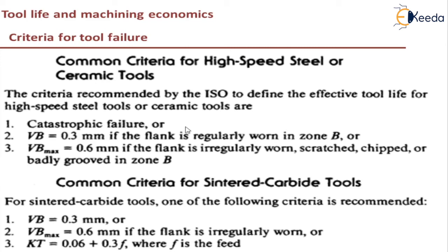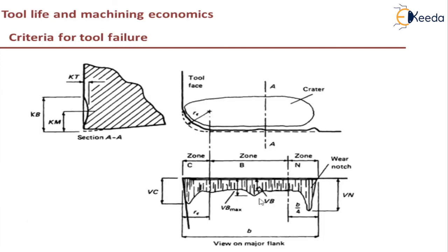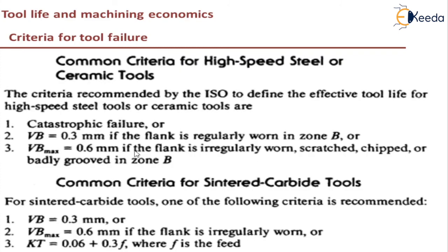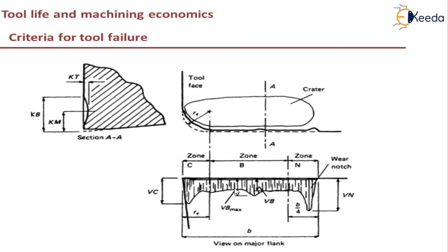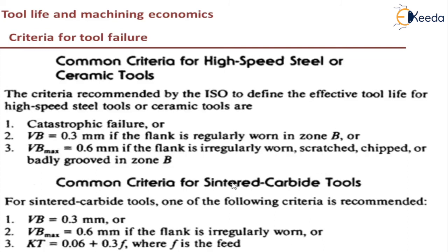There is a criteria for high speed steel or ceramic tools defined by ISO. ISO defines what will be the effective tool life for HSS and ceramic tools. One is it will undergo catastrophic failure, or VB should be equal to 0.3 mm if the flank is regularly worn in zone B. VB max will be equal to 0.6 mm — VB max is for irregular worn, whereas VB is for regular worn — and then the tool life has ended.